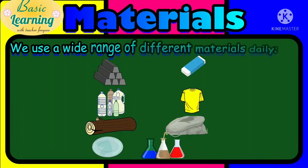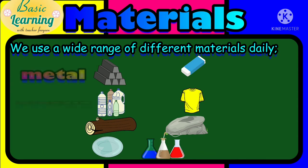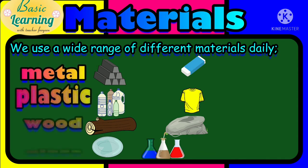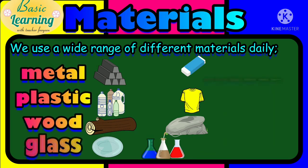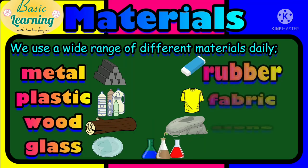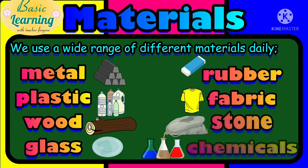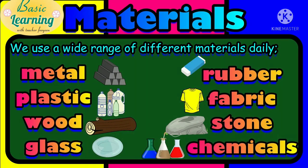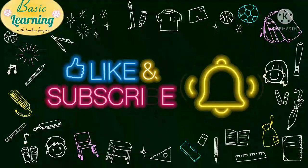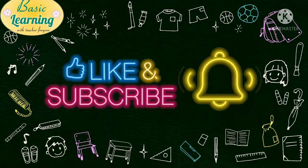Let us have a short recap about materials. We use a wide range of different materials daily, like metal, plastic, wood, glass, rubber, fabric, stone, and chemicals. That is our basic learning about the different types of materials. If you think this video is helpful to you, please don't forget to like, share, and subscribe to this channel. Thank you and happy learning everyone!